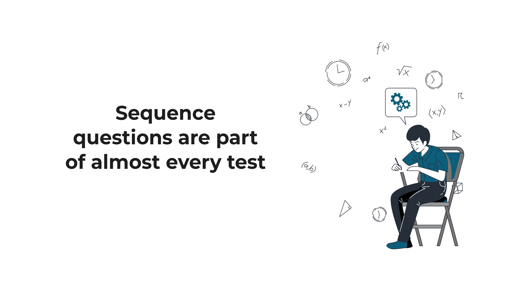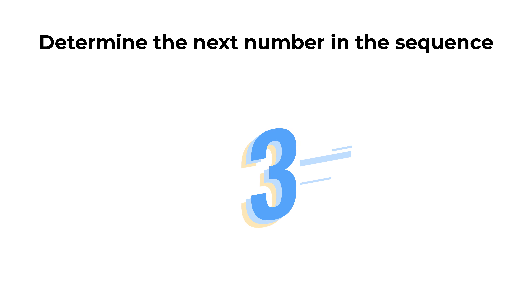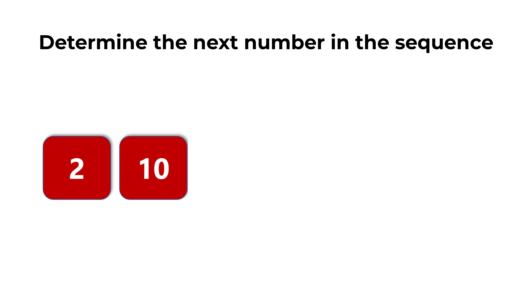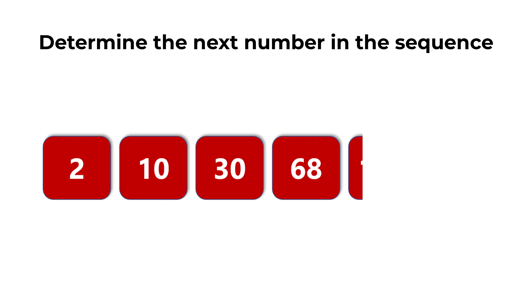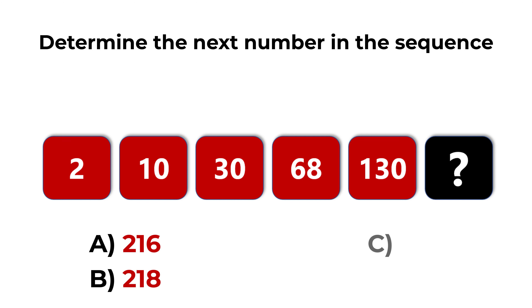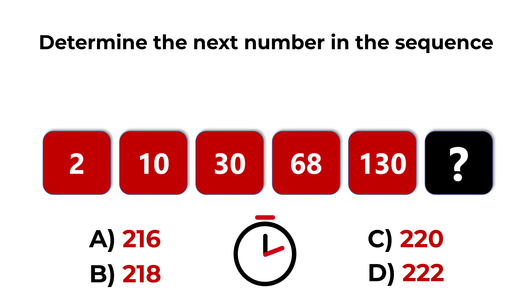You're presented with a sequence of numbers and you need to determine the next number in the sequence. The numbers are 2, 10, 30, 68, 130, and the next number is missing. Can you determine what comes next? You have four different choices: choice A, 216; choice B, 218; choice C, 220; and choice D, 222.